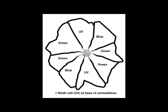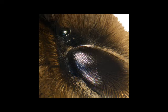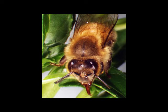In total, the worker has about 10,000 ommatidia between the two eyes. If we think of that in the same way as a digital camera, then that would be the equivalent of a 10-kilopixel camera, which would produce a very coarse image. In the same way, the bee's vision is much coarser than a human eye.